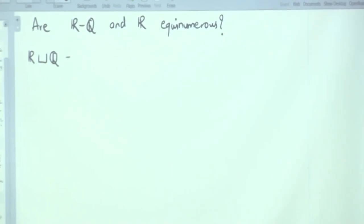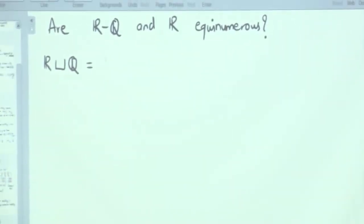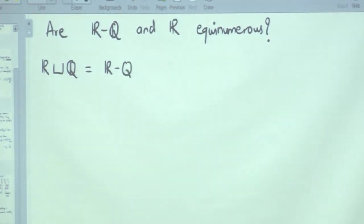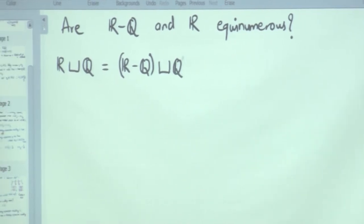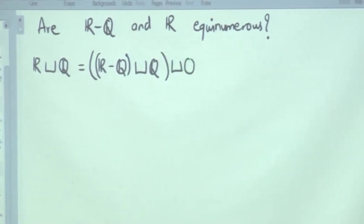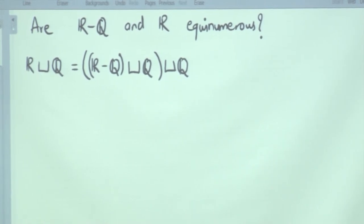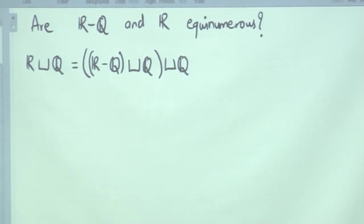Let us start with this. All of you understand disjoint union? So R disjoint union Q is equal to R minus Q disjoint union Q disjoint union Q. I simply partitioned the reals into irrationals and rationals, and then there is one more copy of rationals.